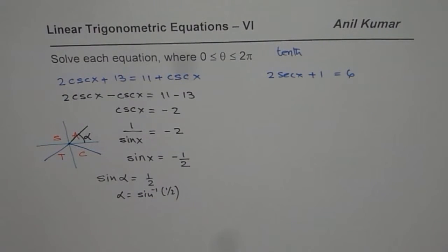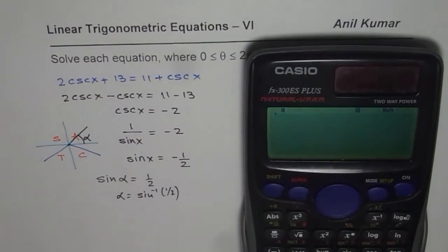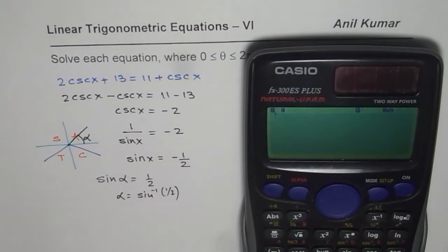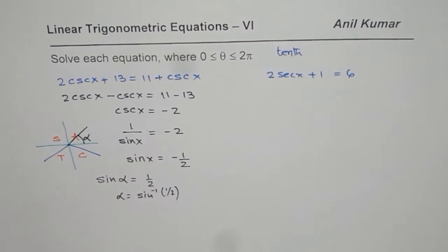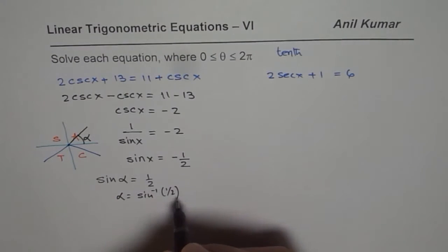We can say α = sin⁻¹(1/2). So we can use the calculator and then say sin⁻¹(1/2), which equals π/6. At present I am using π/6, then we will convert that to decimals later.